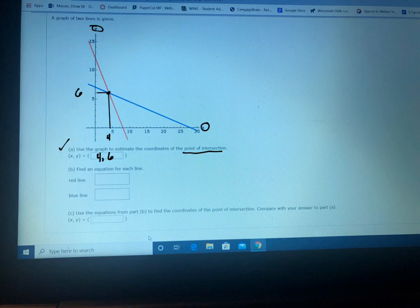So the point would be 4 comma 6. Notice they already have the parentheses, so if you're punching that in your computer you don't have to put parentheses in there, just put 4 comma 6.